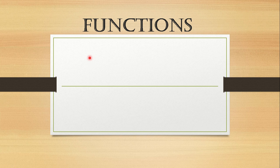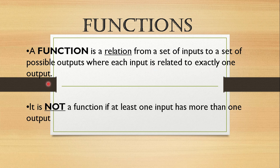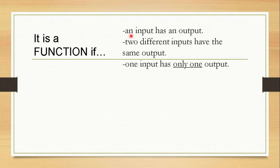How about the definition of function? A function is a relation from a set of inputs to a set of possible outputs where each input is related to exactly one output. And we need to take note that it is not a function if at least one input has more than one output. It is a function if an input has an output, two different inputs have the same output, or one input has only one output.